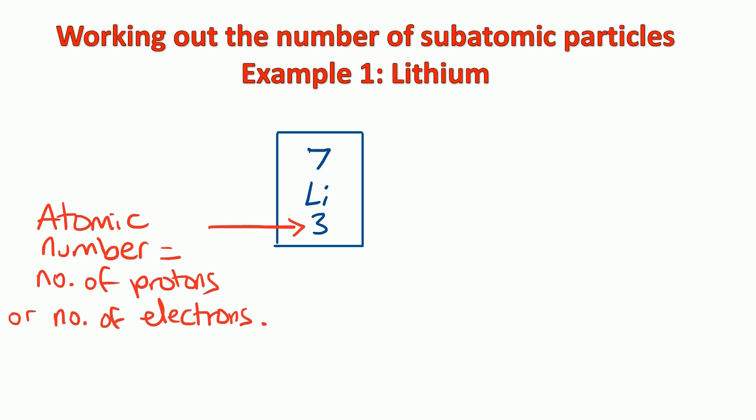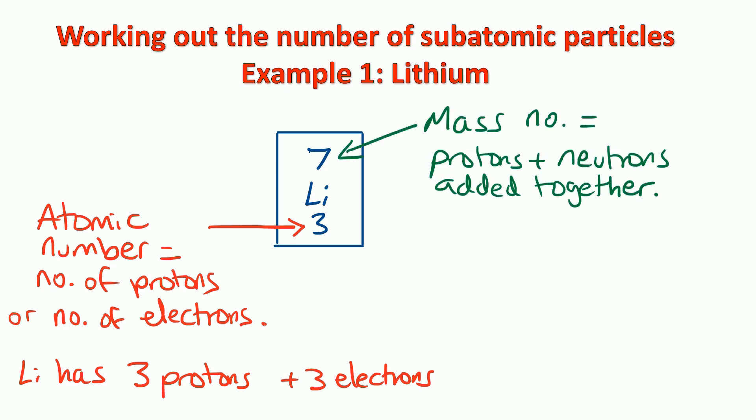Well, the atomic number is the number of protons and it's also the number of electrons. So in the case of lithium, lithium has 3 protons and it has 3 electrons. The mass number at the top is the number of protons and neutrons added together. So for lithium, we know that the number of protons and neutrons comes to 7.